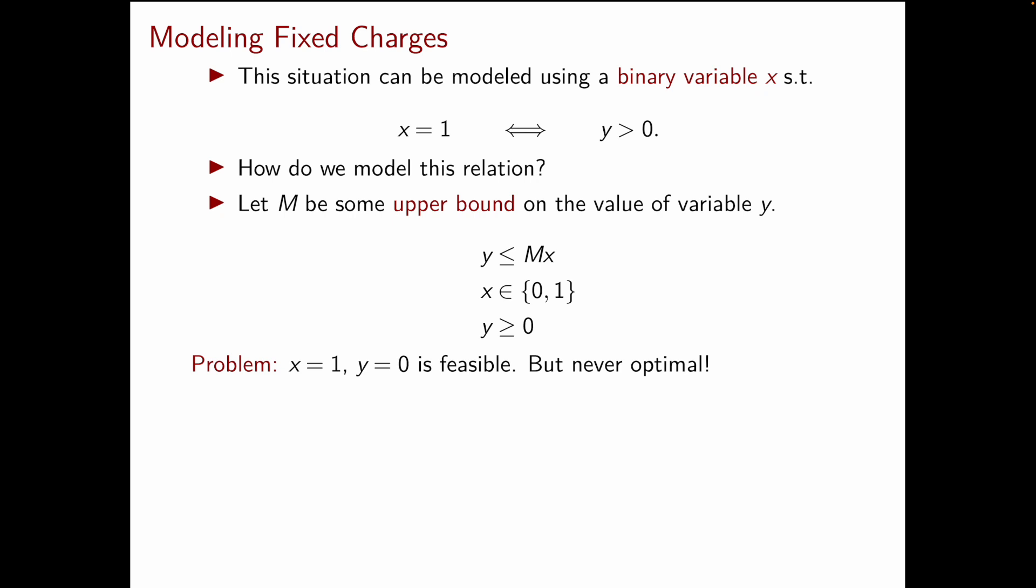So as a result we didn't exactly obtain our if and only if. In fact our system of constraints allows for the possibility x equal to one and y equal to zero, which was not allowed instead in our if and only if.